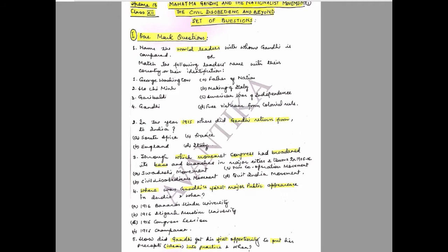Question 4: Where was Gandhi's first major public appearance in India and when? Options: A) 1916, Banaras Hindu University; B) 1906, Aligarh Muslim University; C) 1916, Congress Session; D) 1916, Champaran. Choose the correct option.